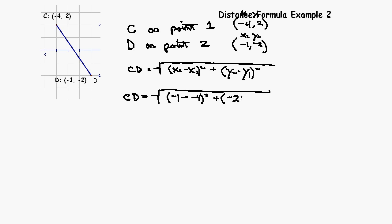Now, we go back to our algebra and usage of integers. We know that two negatives right here make a positive, so now this becomes negative 1 plus 4 squared, plus negative 2 minus 2 is negative 4 squared.